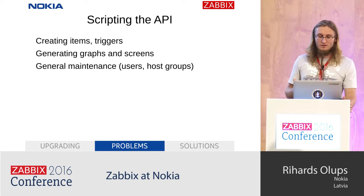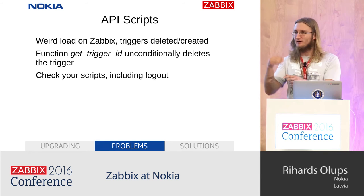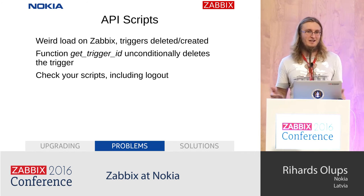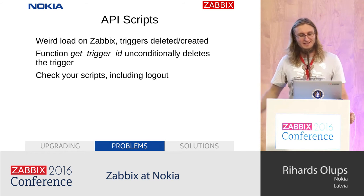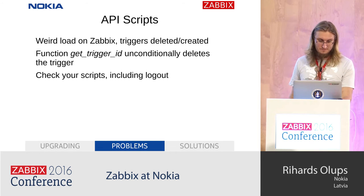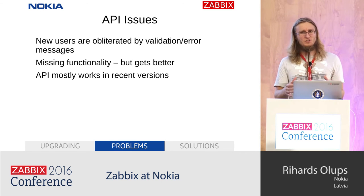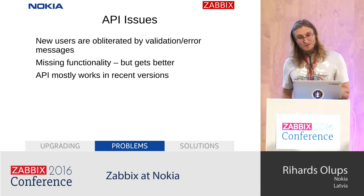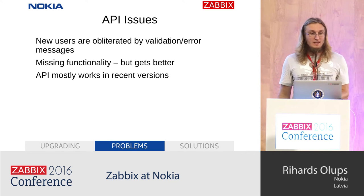Another thing is API scripting — we use this a lot. We saw a strange load on Zabbix where triggers were seemingly created and then deleted. It turns out the script had a tiny logic problem where the getTriggerID function just deletes the trigger and then it has to be created again. So check your API scripts — even if they seem to work initially, they might have weird logic like this. Also check that your API scripts actually log out, otherwise you'll have hundreds of thousands of user sessions, which slows down a few operations with Zabbix. New users working with the API are totally lost because error messages like 'invalid parameters' are very unhelpful. There was a lot of missing functionality in the API — this is getting better; 3.0 added the value mapping API, which was really awesome.